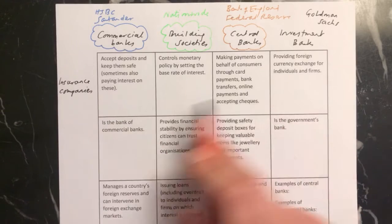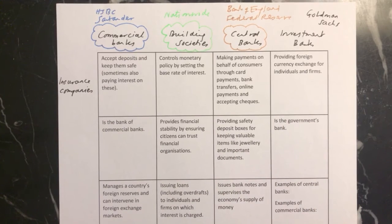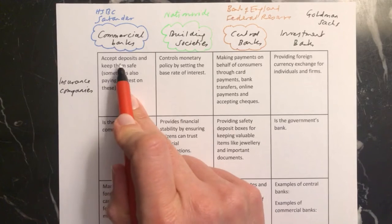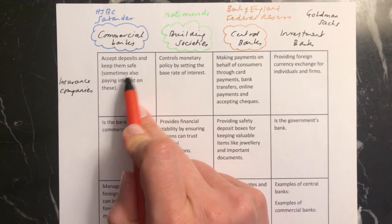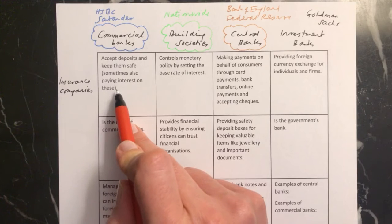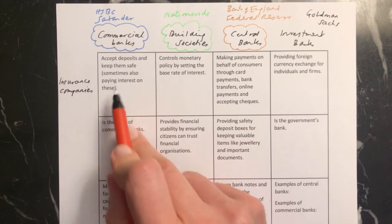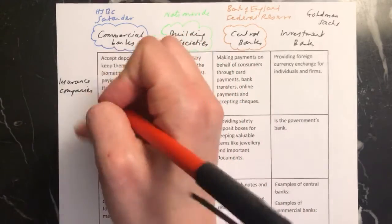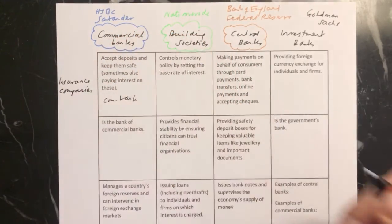We're now going to look at all the different categories and whether they're things done by commercial banks or central banks. Accepting deposits and keeping them safe — sometimes also paying interest on these. So this is where you can put your money to keep it safe and earn interest on it. That is a commercial bank.